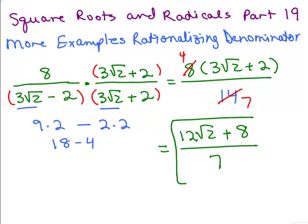Some people leave the numerator factored as 4 times 3 square roots of 2 plus 2, and that isn't necessarily wrong. It's a little bit more simplified sometimes to go ahead and do the distributive property.